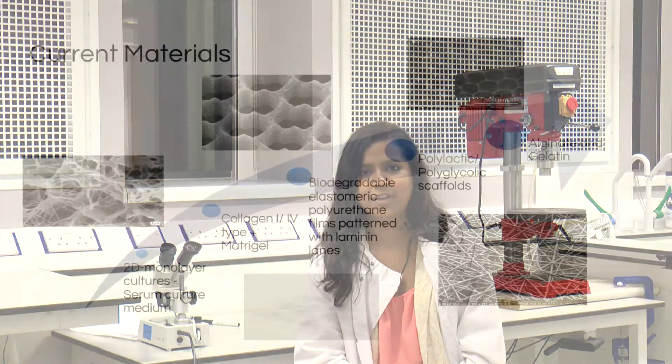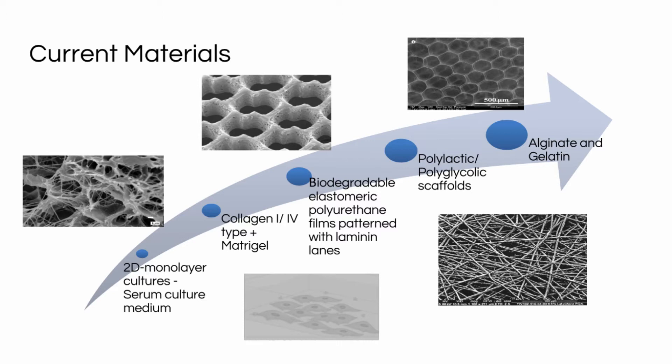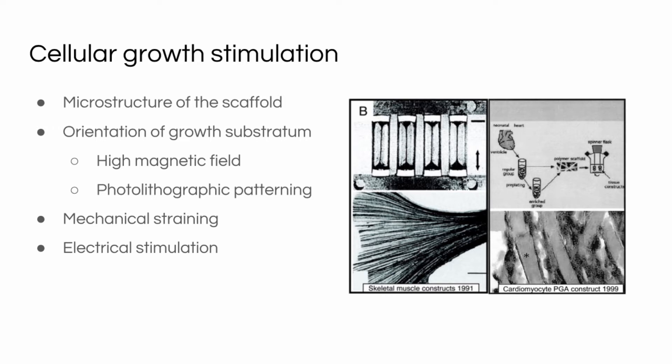The materials used in cardiac tissue engineering include collagen type 1 or type 4 present in high concentrations of Matrigel, or biodegradable elastomeric polyurethane patterned with laminin lanes. Recent developments include polylactic acid or polyglycolic acid scaffolds, and also algae or gelatin as scaffold materials. Several factors affect cell orientation and cell growth, including the microstructure of the scaffold and the orientation of the growth substratum. External stimulations such as mechanical straining, electrical stimulation, high magnetic fields, and photolithographic patterning can be used to enhance cell orientation.